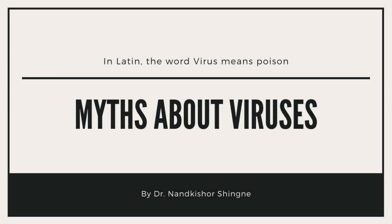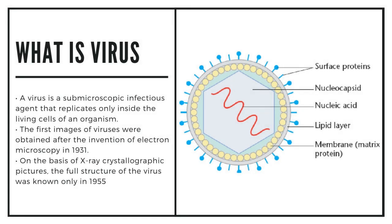What is a virus? A virus is a submicroscopic infectious agent that replicates only inside the living cells of an organism. The first images of viruses were obtained after the invention of electron microscopy in 1931. On the basis of X-ray crystallographic pictures, the full structure of the virus was known only in 1955. As you can see in the adjacent figure, there is a single strand of RNA covered with a protein capsule called a capsid — that is the structure of a virus.